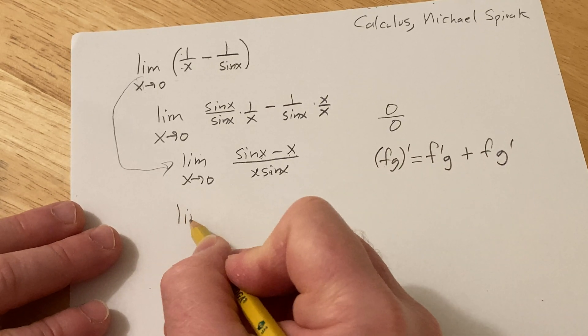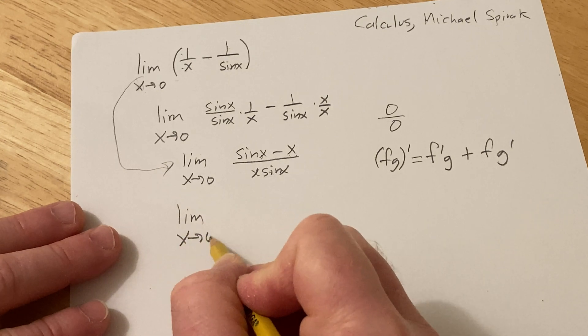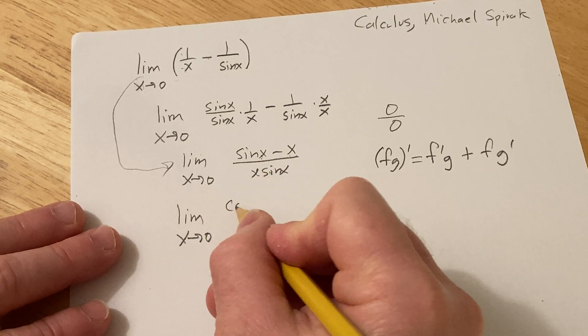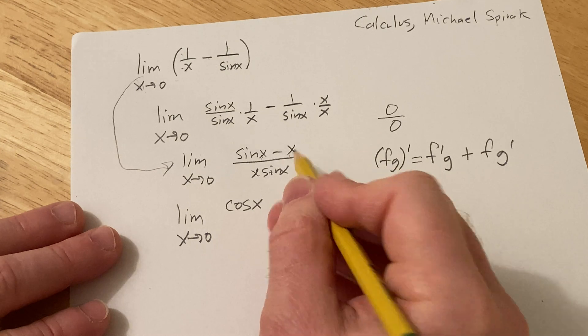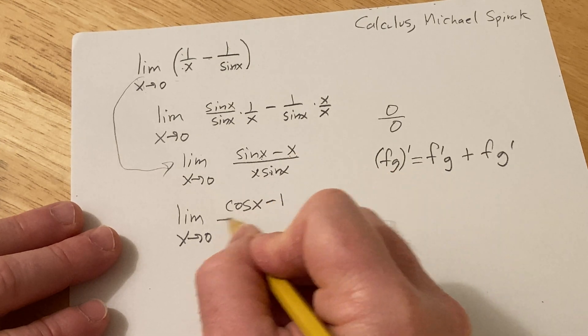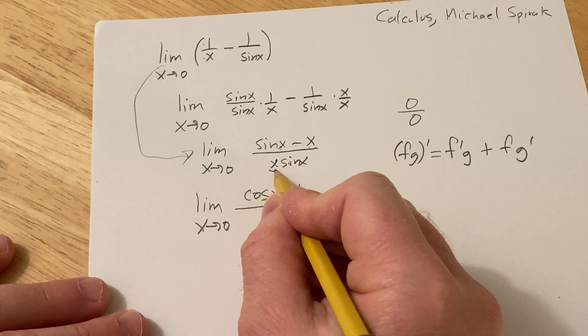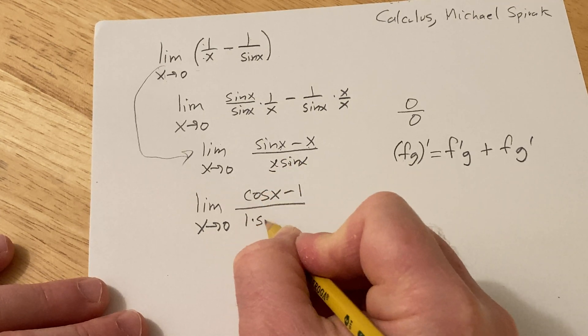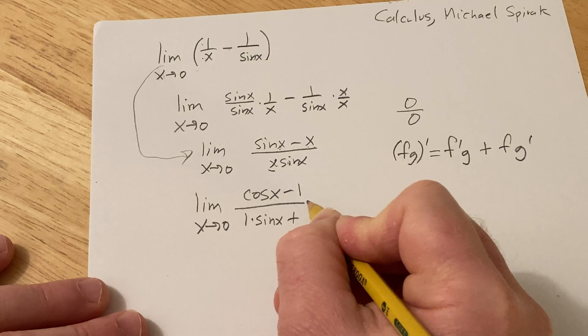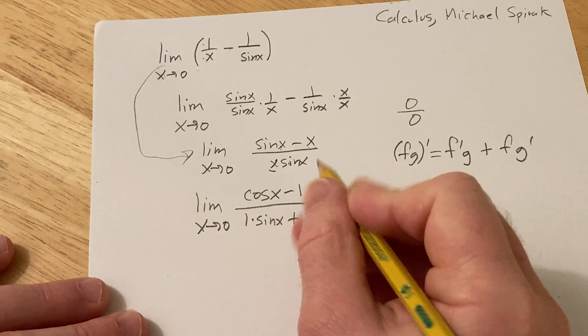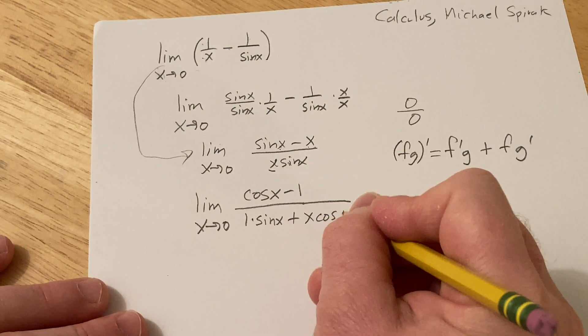So let's do it now. This is the limit as x approaches 0, the derivative of sin is cosine minus the derivative of x is 1. On the bottom here, we'll use the product rule. The derivative of the first is 1 times the second plus the first, which is x, times the derivative of the second, which is cosine x.